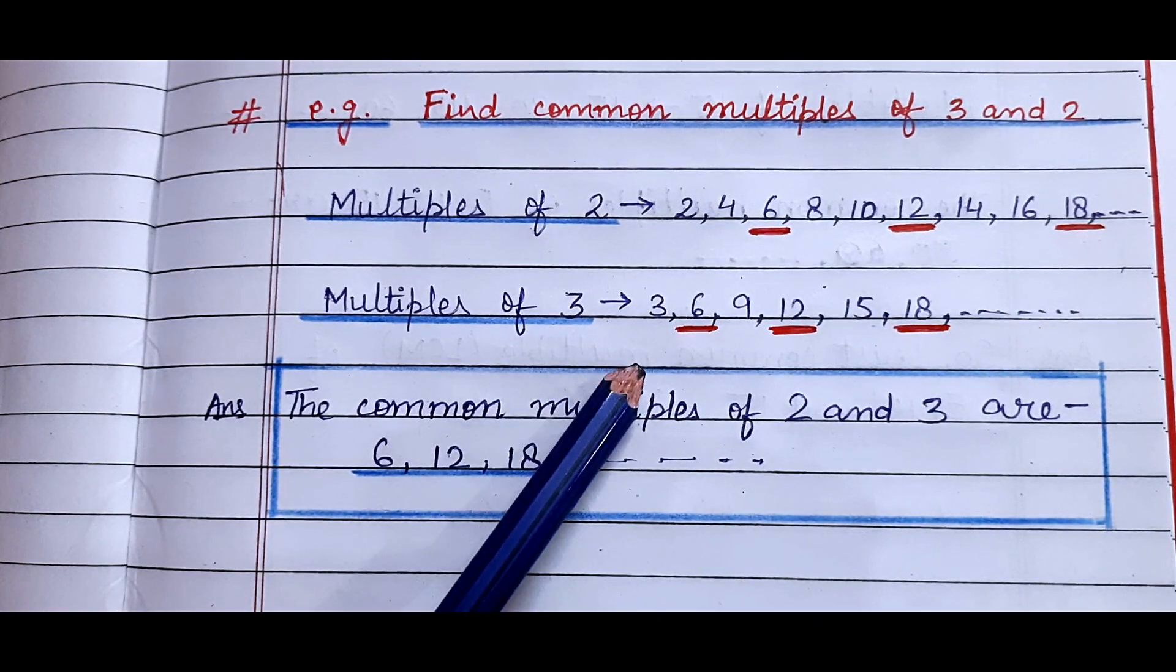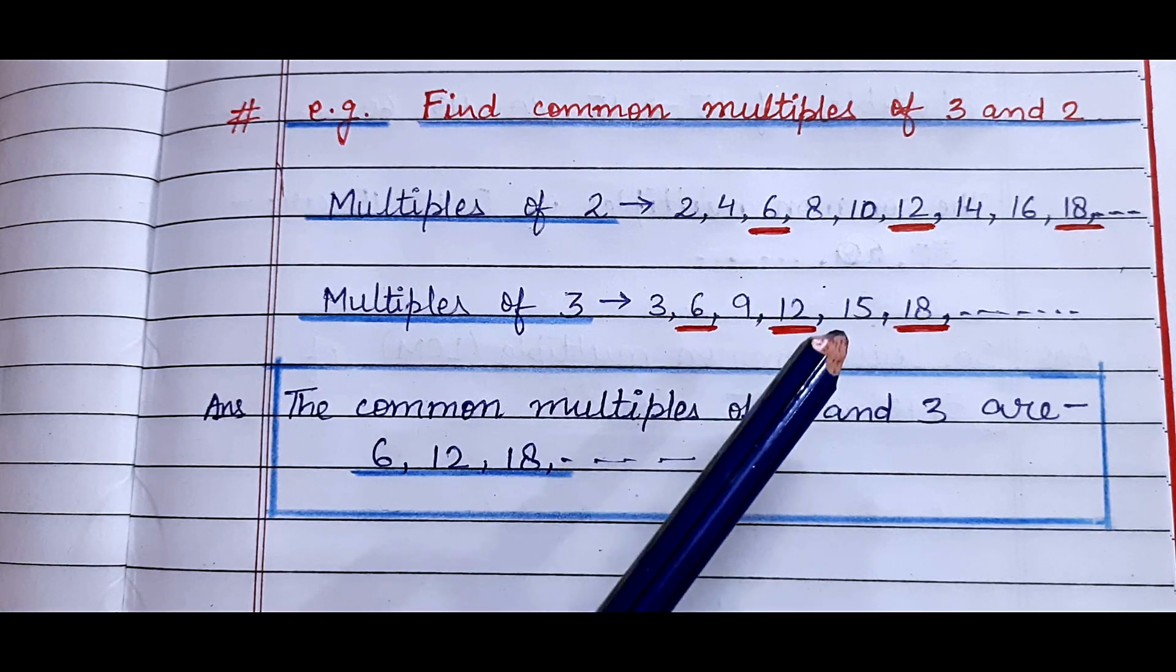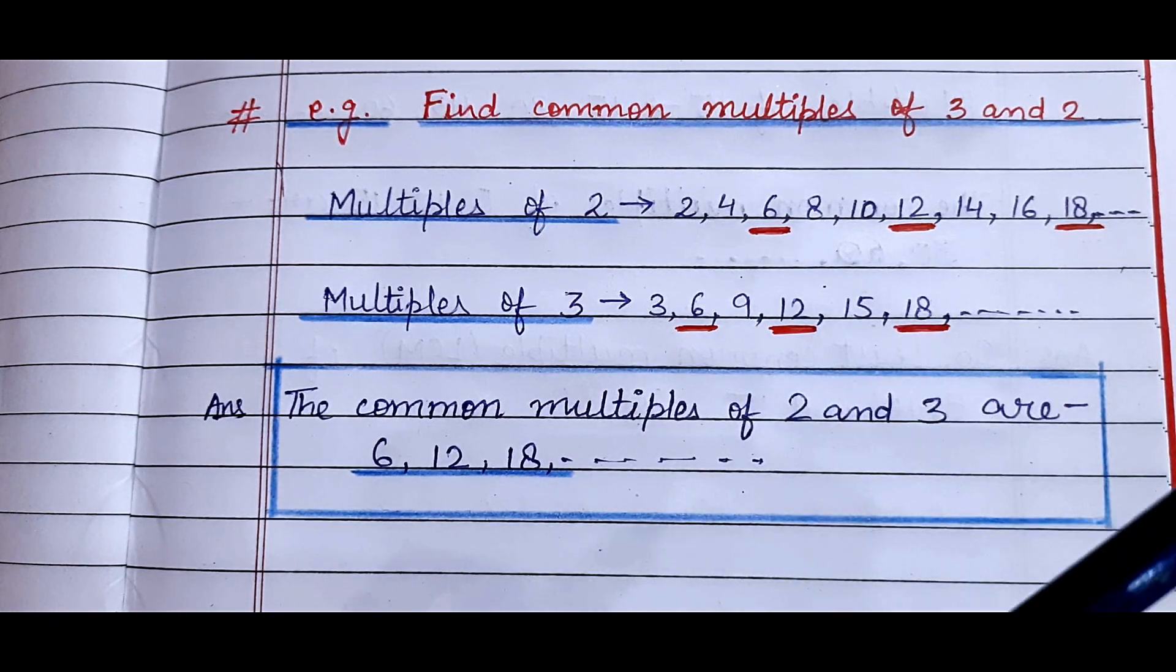Similarly, the multiples of 3 are 3, 6, 9, 12, 15, 18 and so on.